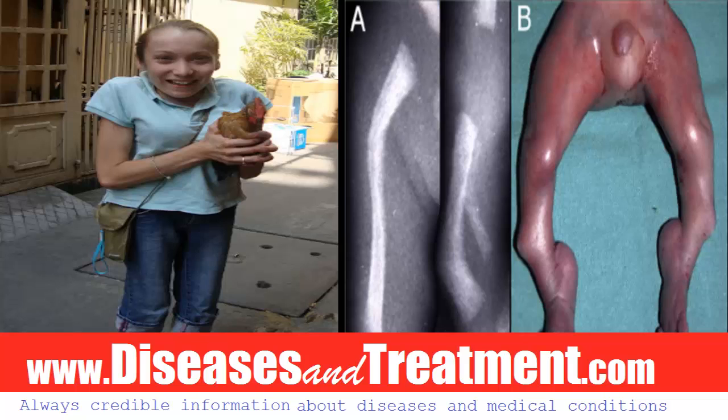Many people with Campomelic Dysplasia have external genitalia that do not look clearly male or clearly female — known as ambiguous genitalia. The internal reproductive organs may not correspond with external genitalia, and can be male-like testes, female-like ovaries, or a combination of both.